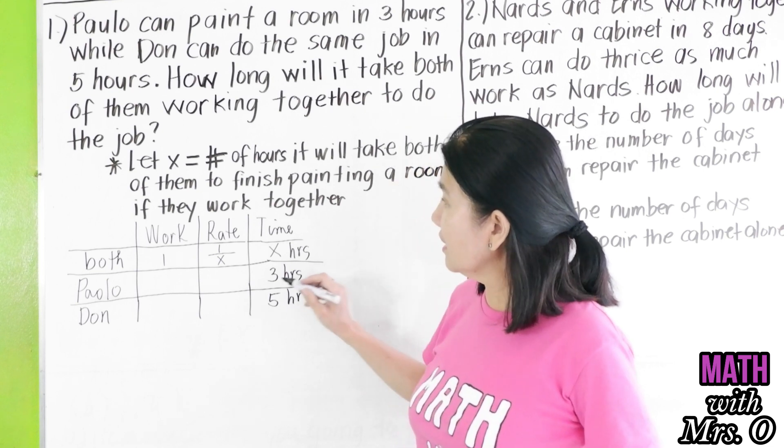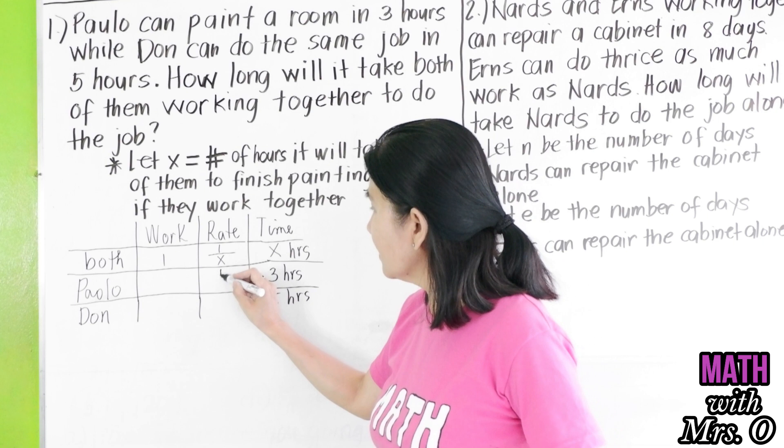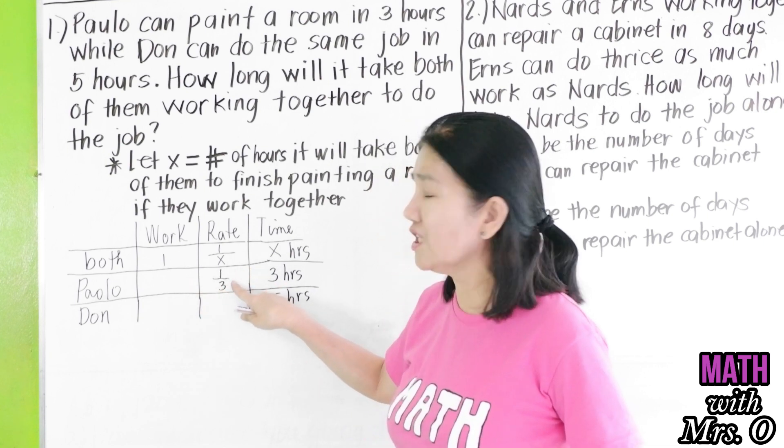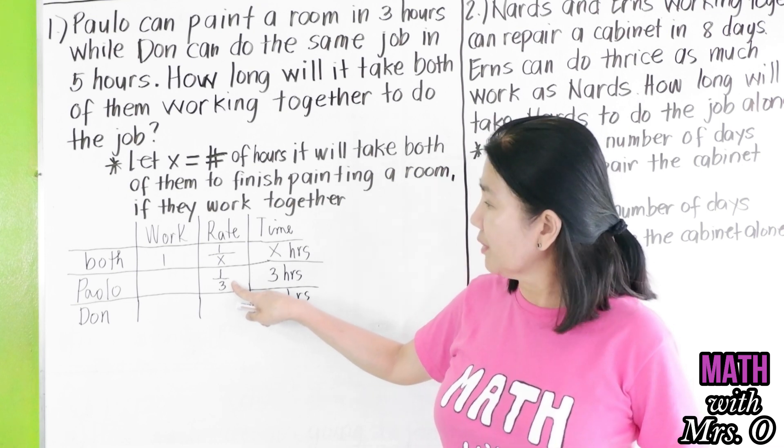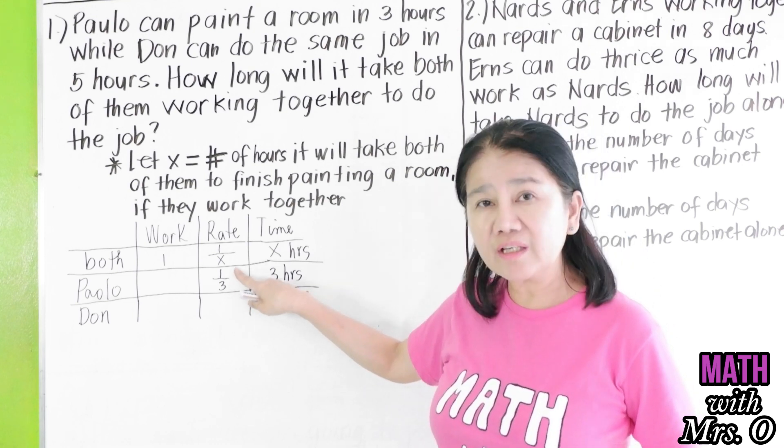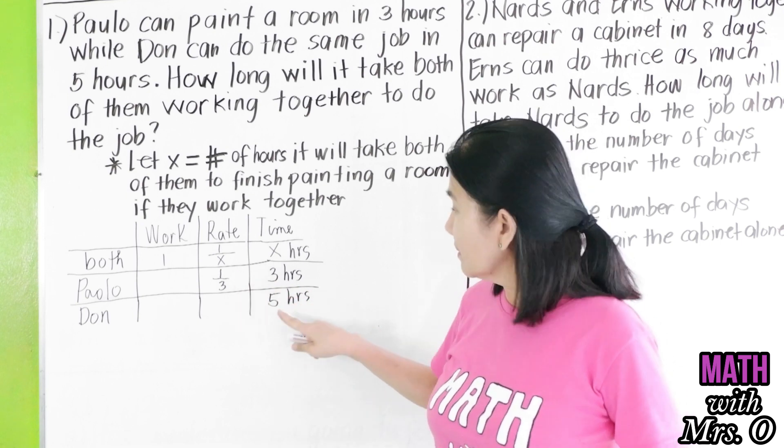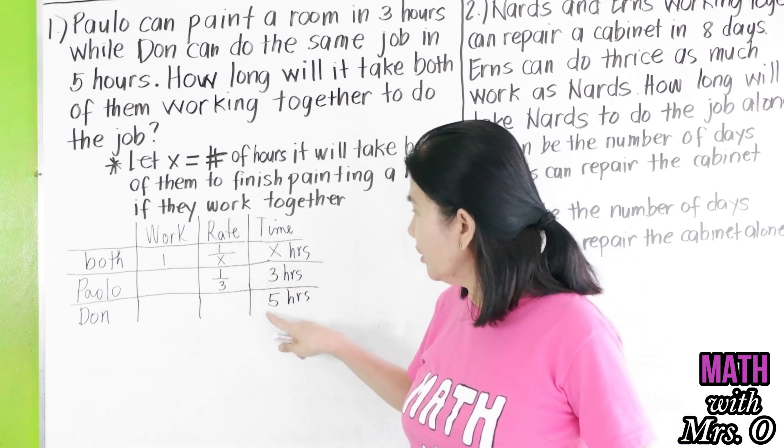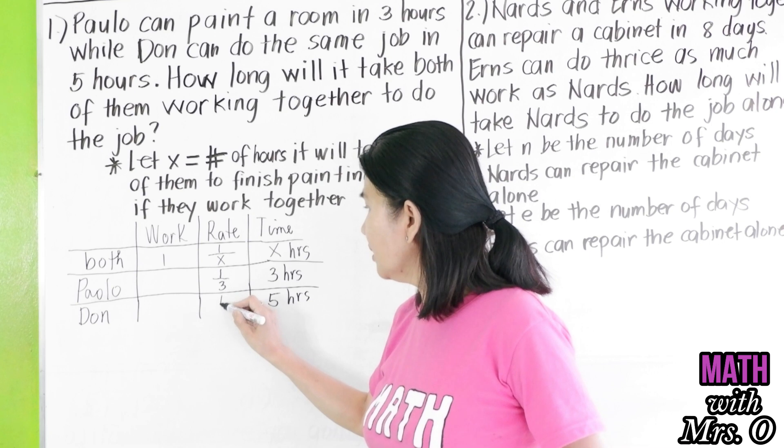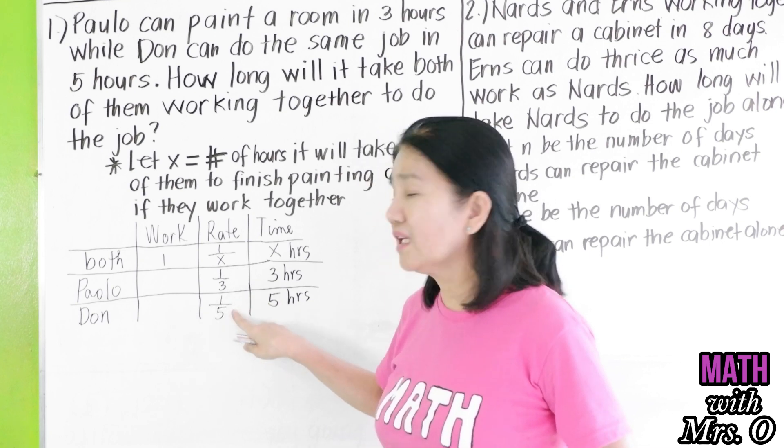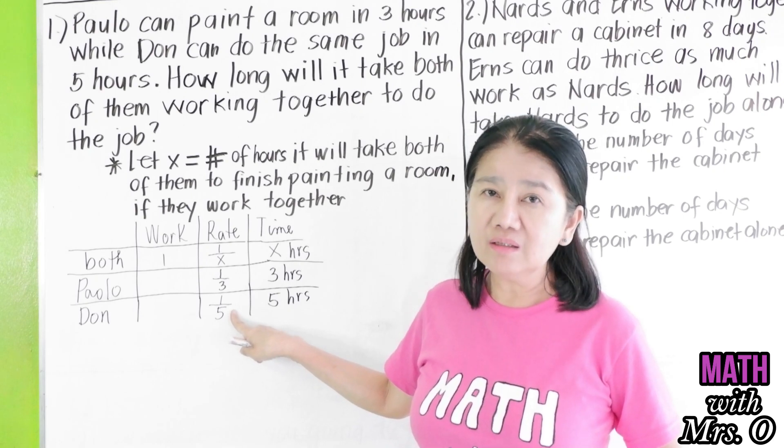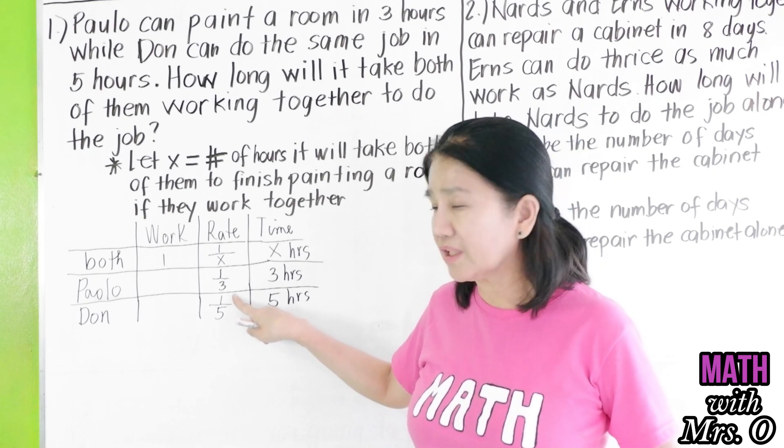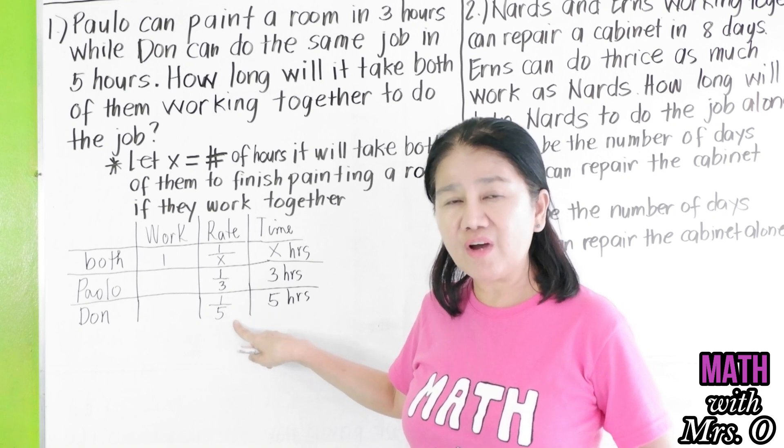So the rate of Paolo is one over three. What does it mean? It means that Paolo can finish one third of the job per hour or one work in three hours. What about the rate of Don? The rate of Don will be one fifth, meaning Don can finish one fifth of the work per hour or one work in five hours.